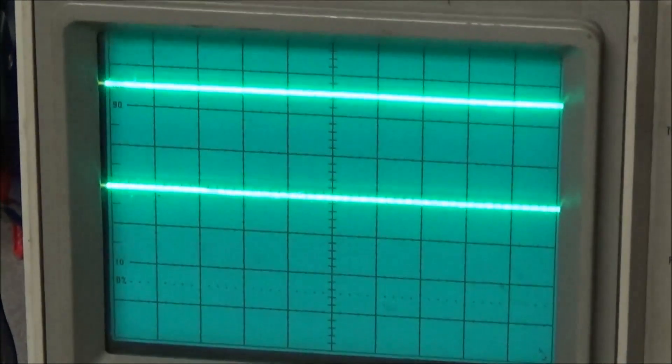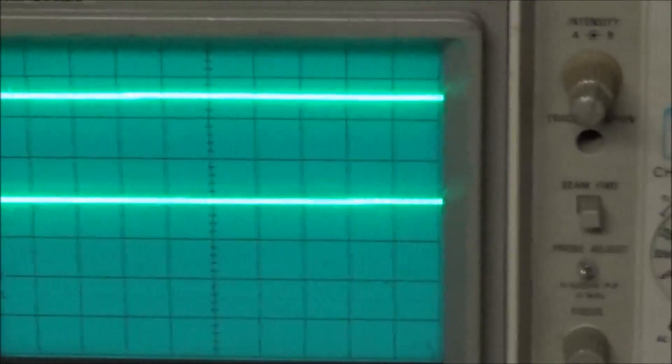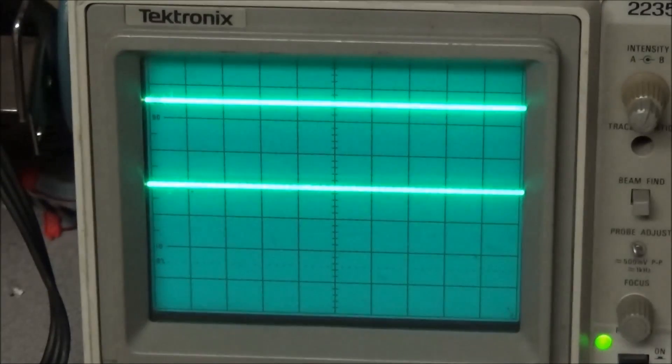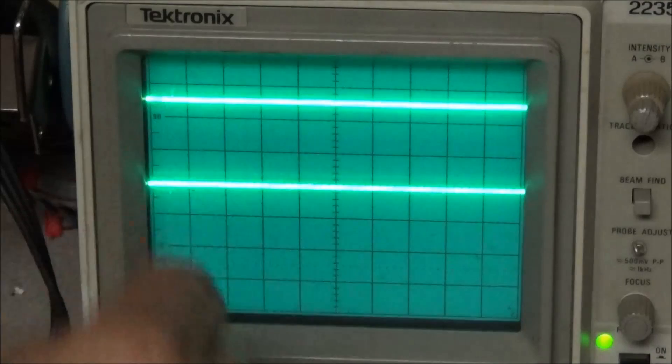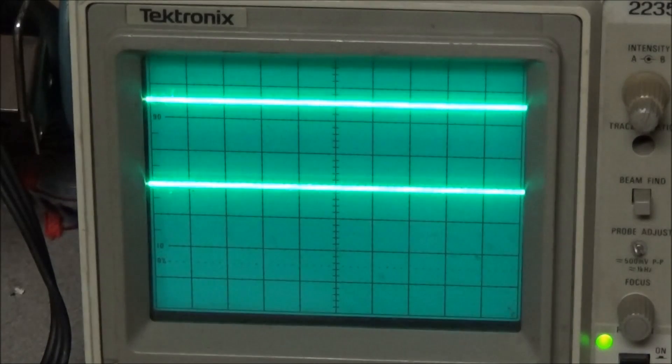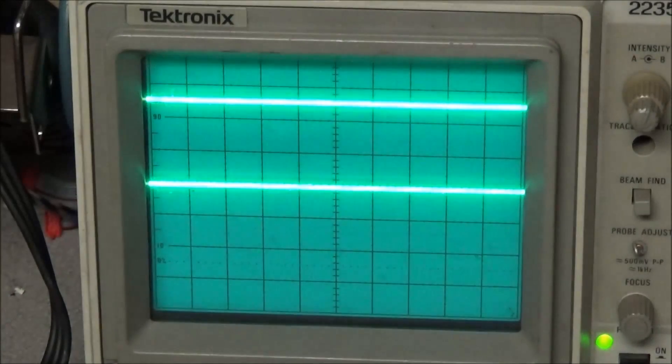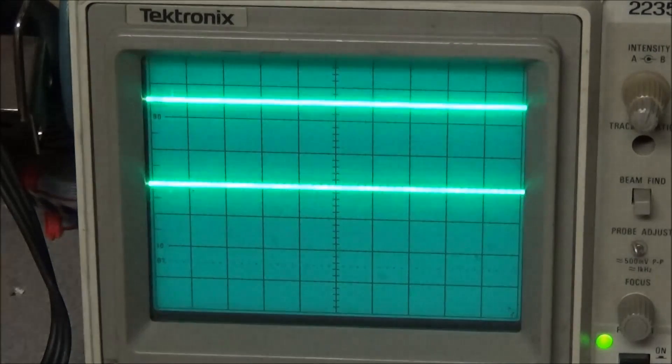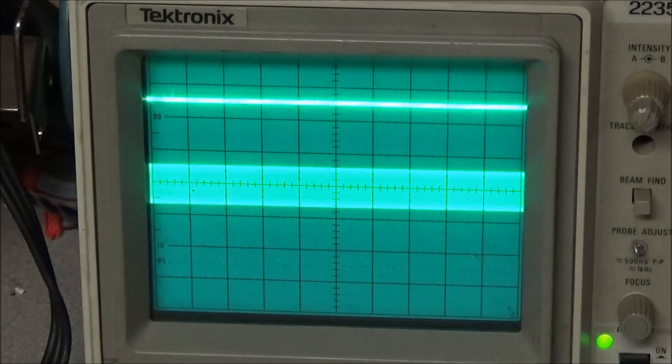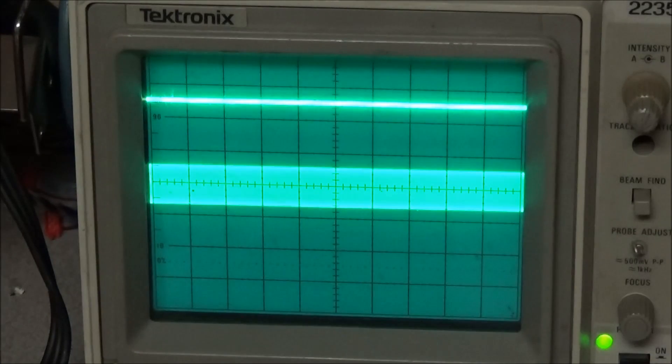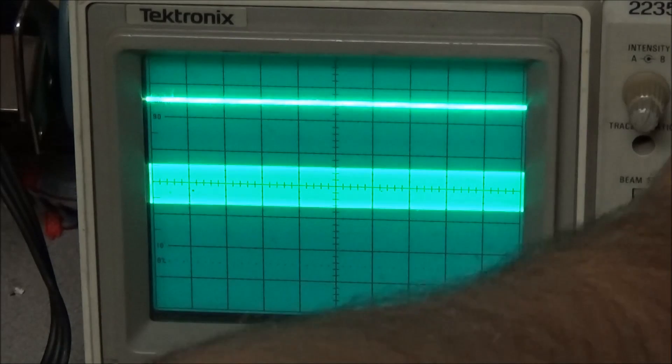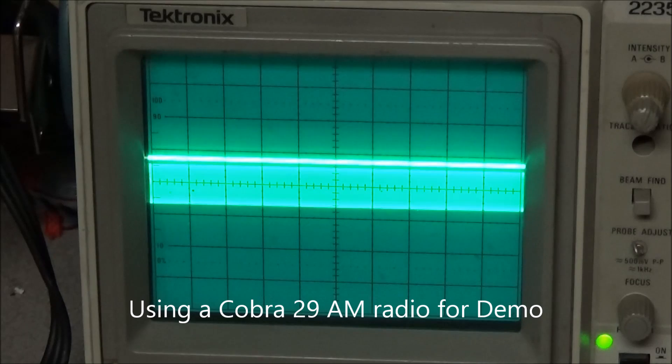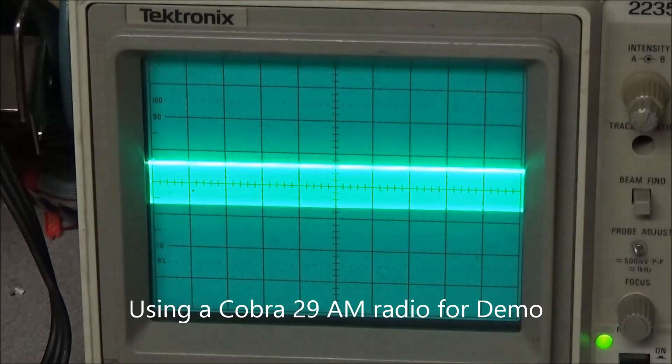So we'll go down here to our scope and we'll demonstrate how this works on the scope. Now you see our two channels here on the scope displayed - we have channel one and channel two in XY mode. When we key up the radio and I'll turn the mic gain down, we can see our RF carrier here. What the top line is is that demodulated audio. So if we'll come here and move this down and let it ride right on top of that RF carrier...